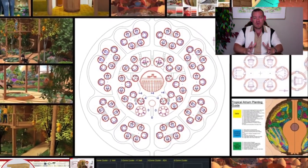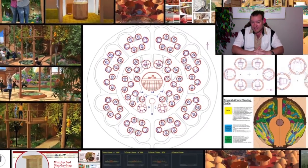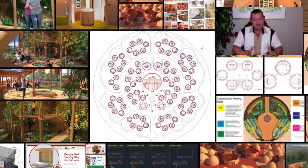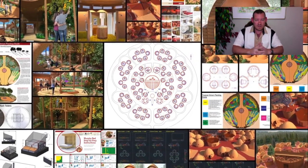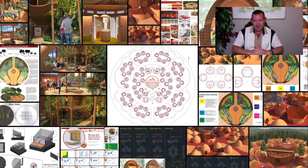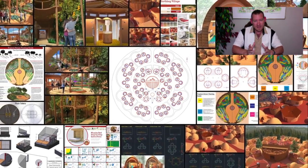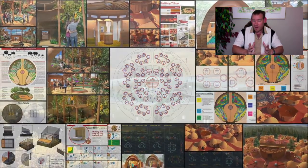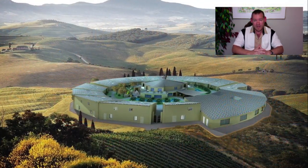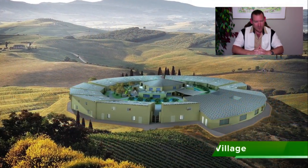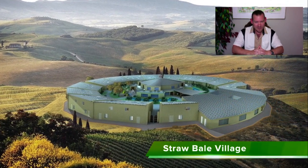If you want to see references for all those statistics, visit the written blog — they're in the first paragraph. The crazy thing about it is there's already enough food to feed all the people on the planet right now. So where's the breakdown?